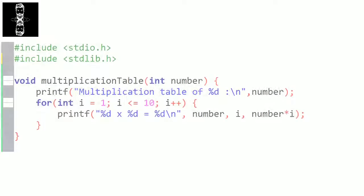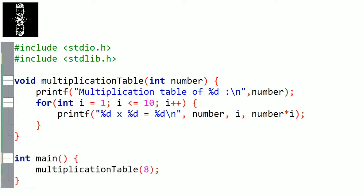Third function: let's make a function that prints the multiplication table of an integer from 1 to 10. It returns nothing, so it's void type. Let's name it multiplicationTable. In parameters, we need an integer we can name number. Inside, we first print that it's a multiplication table, then we need a for loop where i goes from 1 to 10, and inside we print: number multiplied by i is equal to number times i. If we call the function with 8, we get the multiplication table of 8.